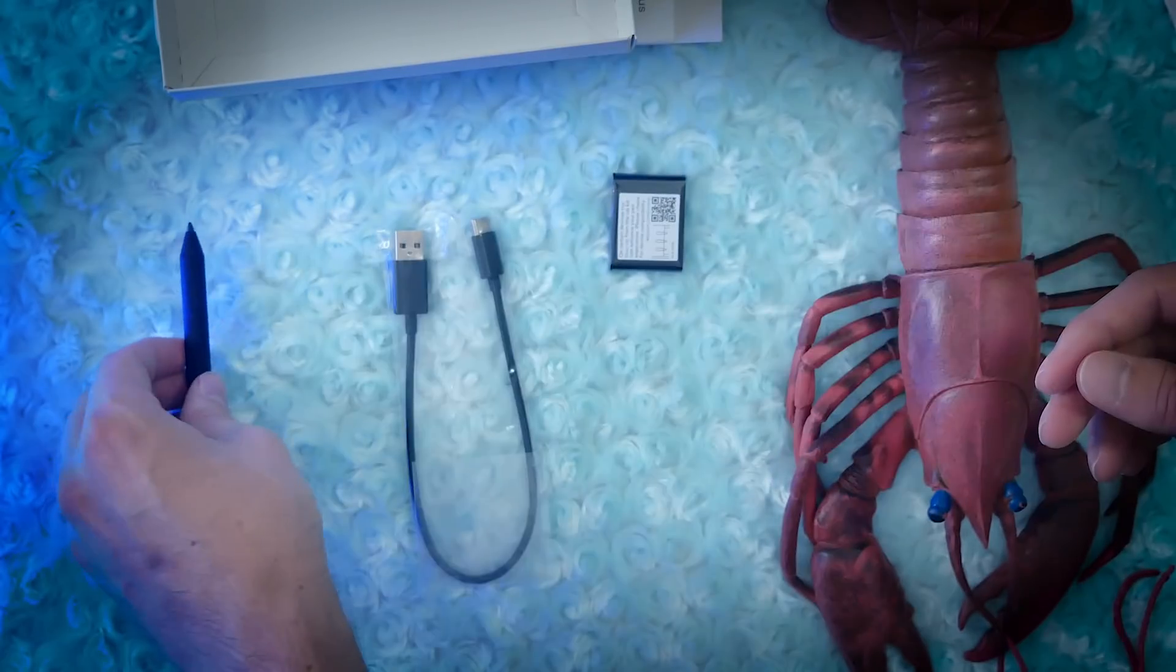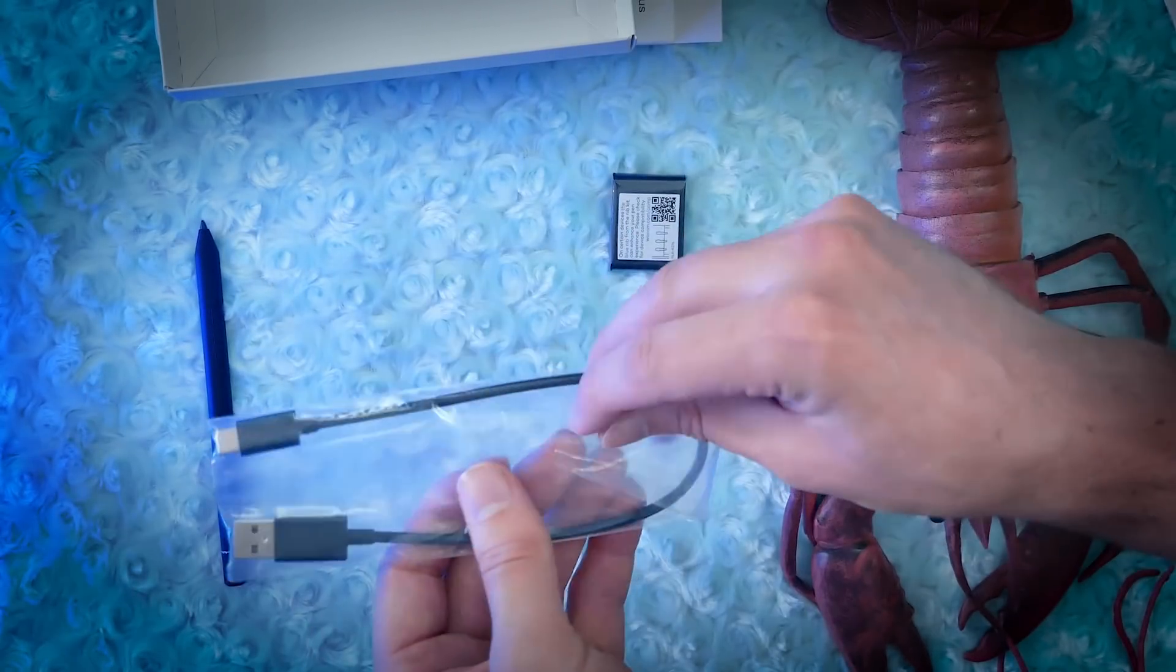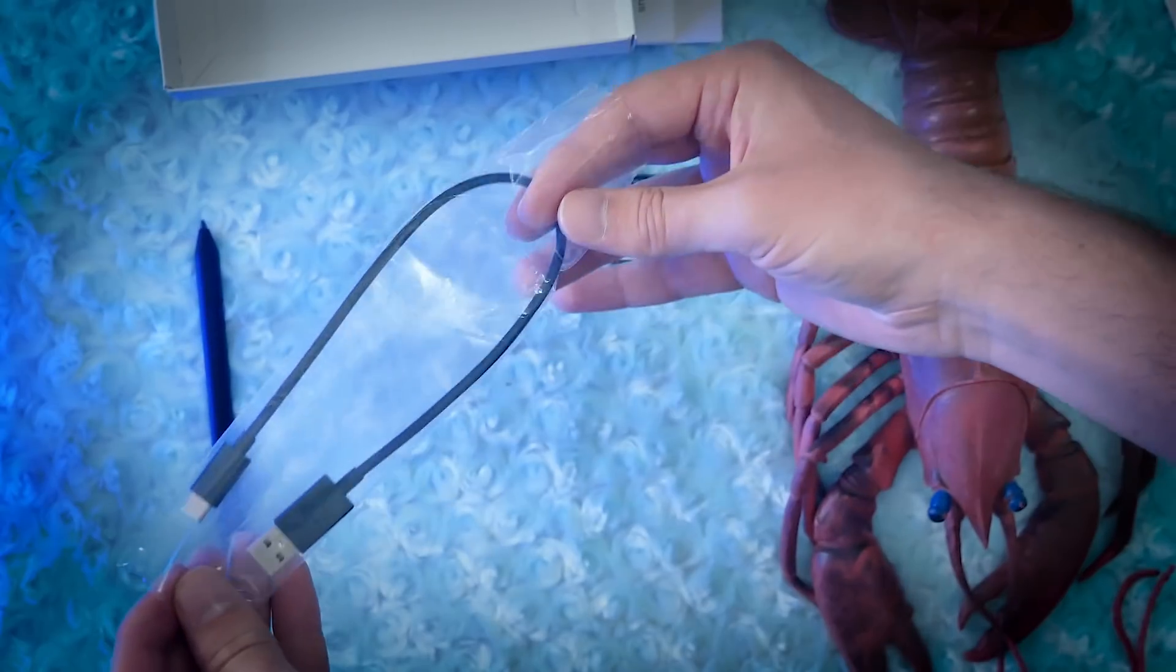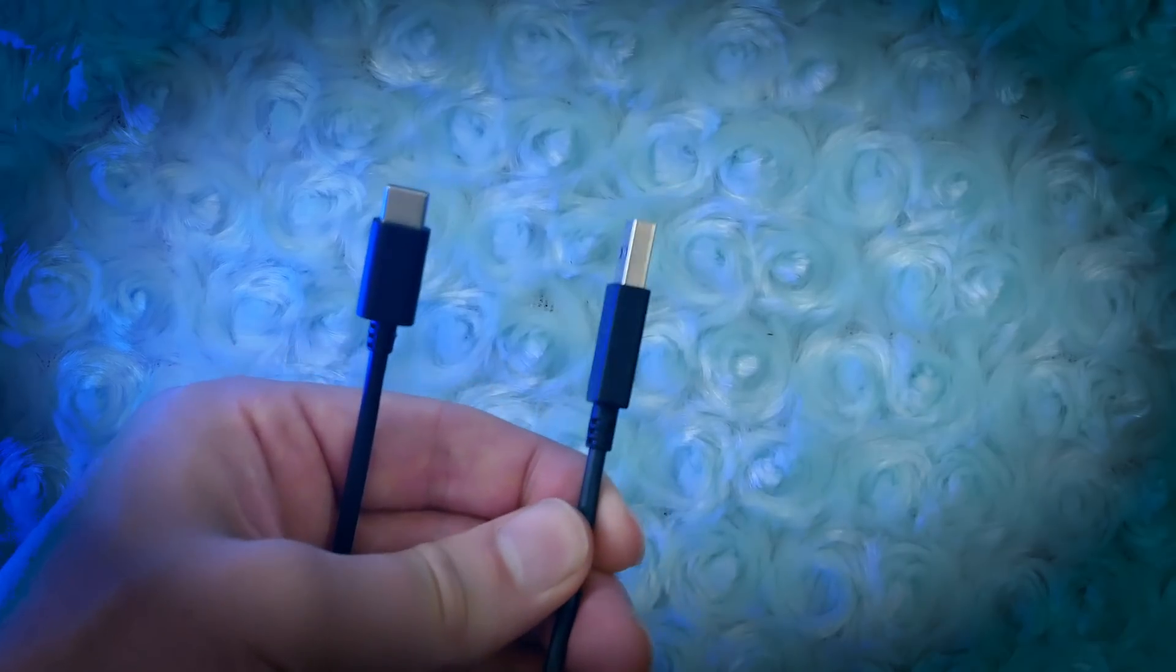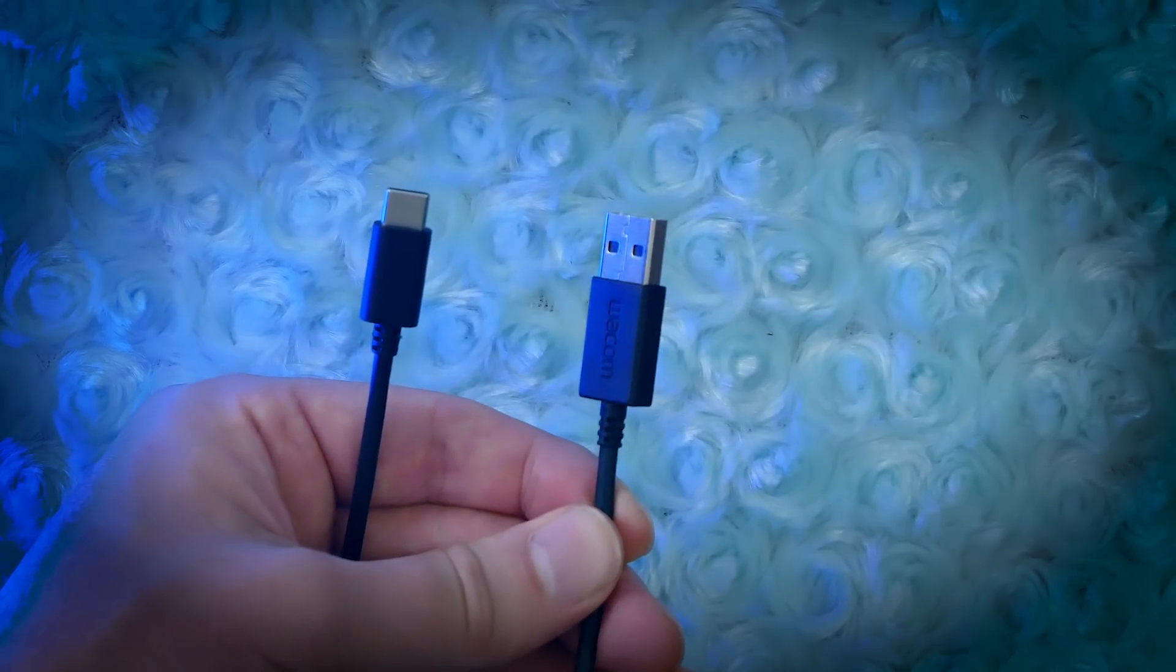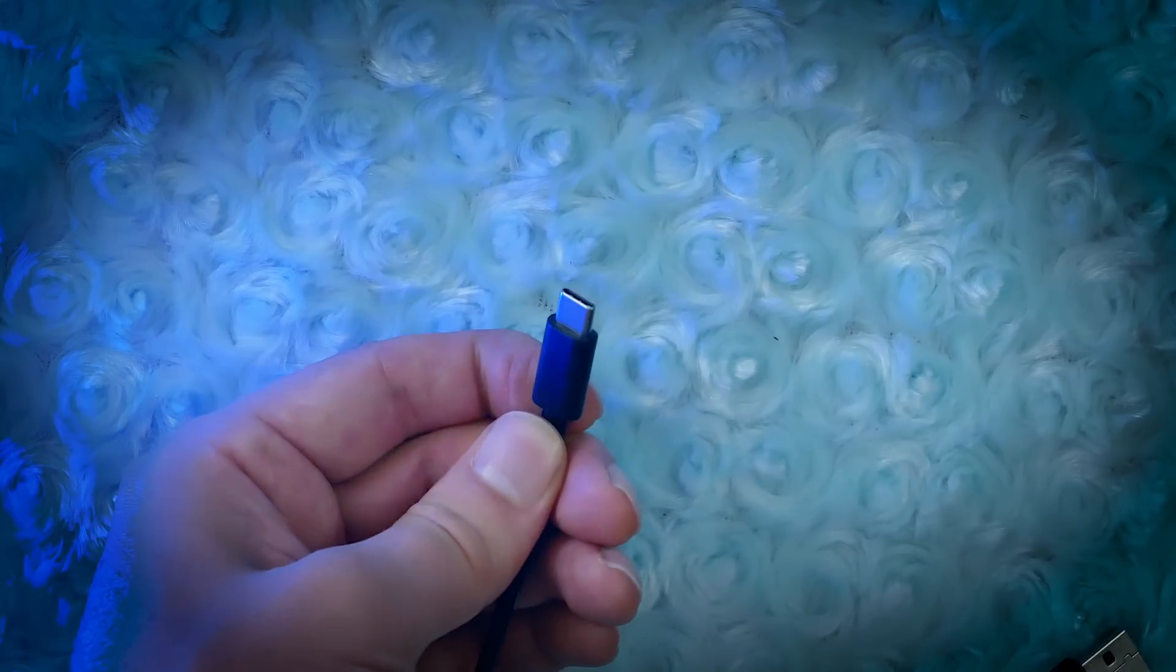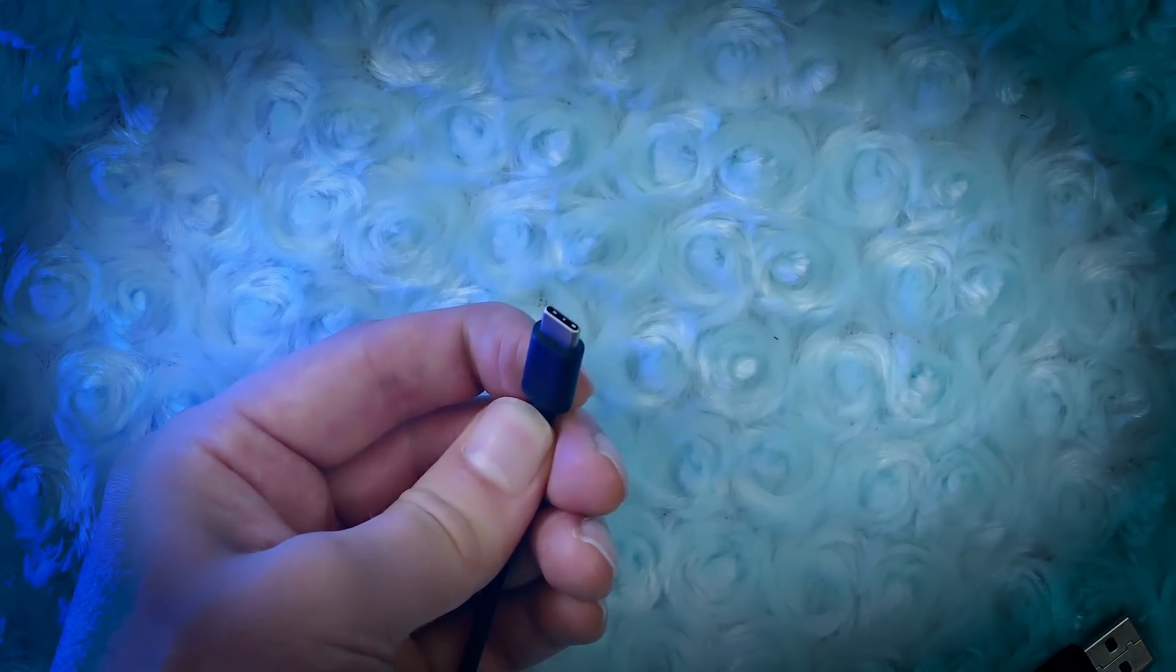The Wacom Bamboo Ink Plus comes with a few accessories. There is a USB cable, which I'll unwrap. It's USB-A on one end that plugs into your computer, and on the other end it's USB-C and that plugs into the Wacom Bamboo Ink pen.